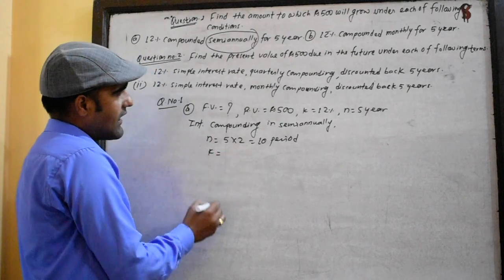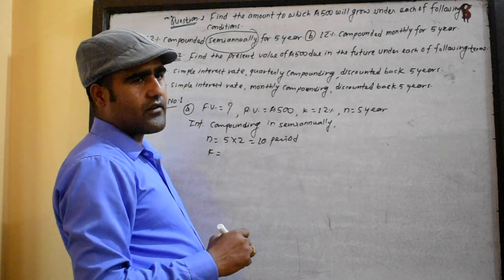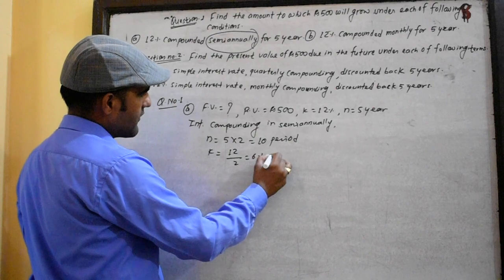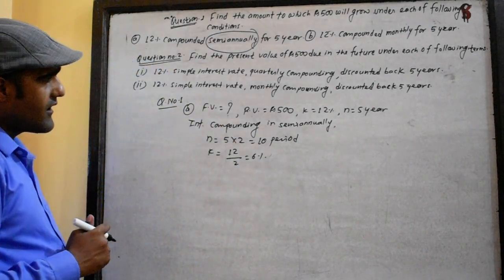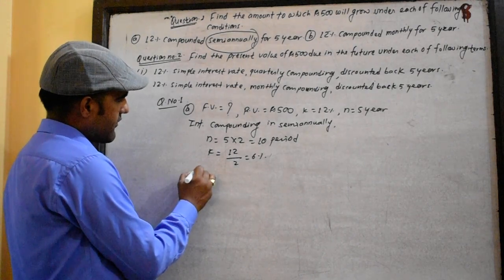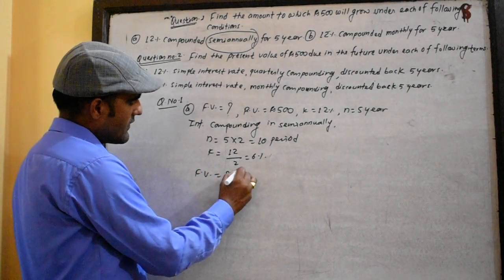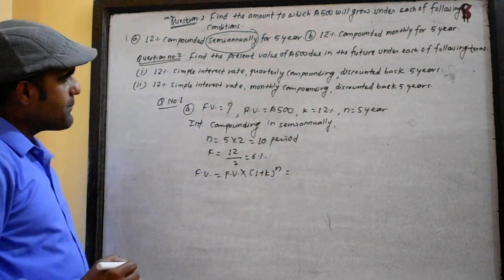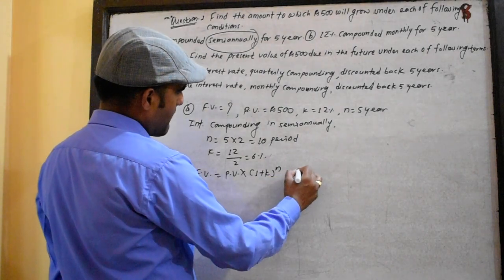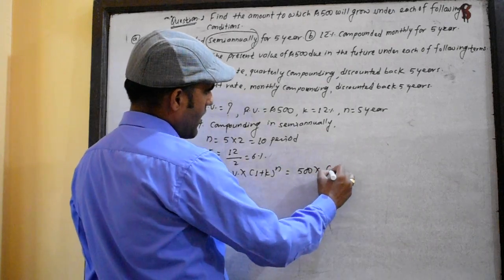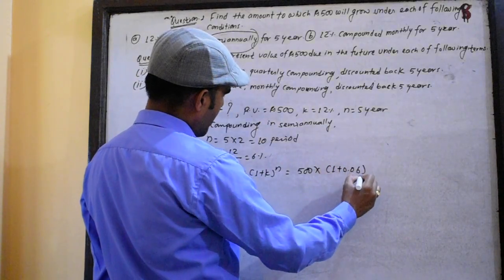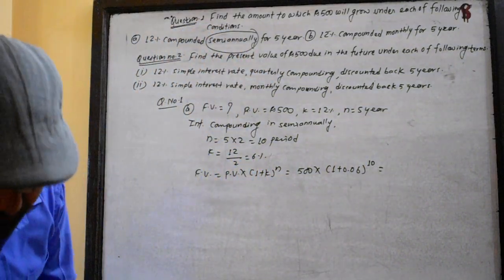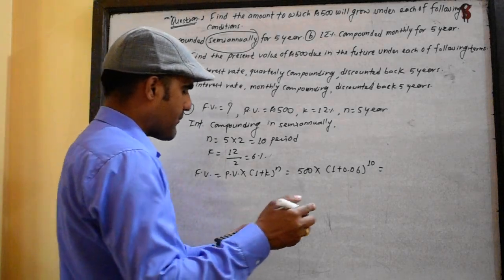We take 12% annually, semi-annually that is 6% per period. The formula is FV equals PV times (1 plus k) to the power n. PV is 500, k is 0.06, and n is 10. The result is 895.42.